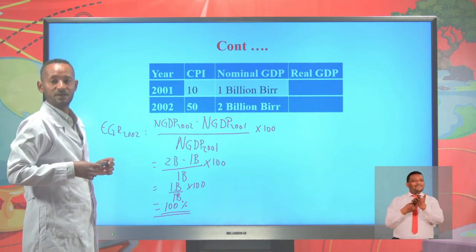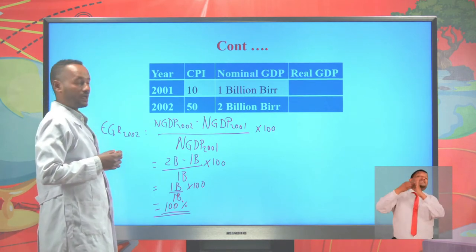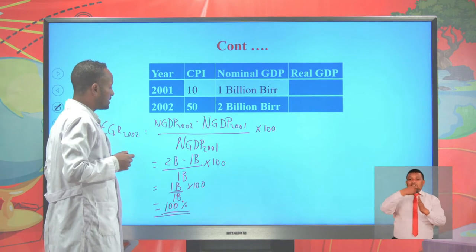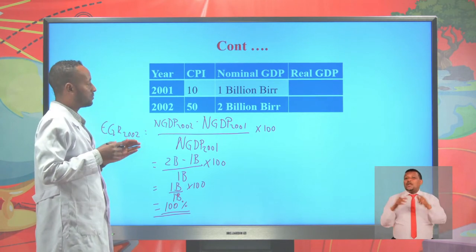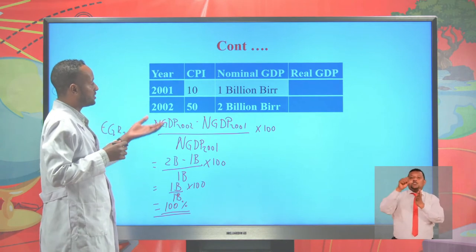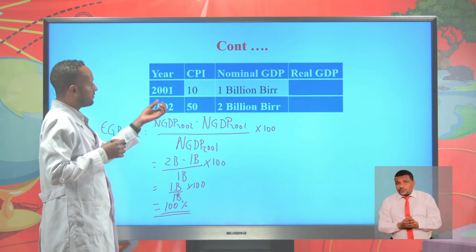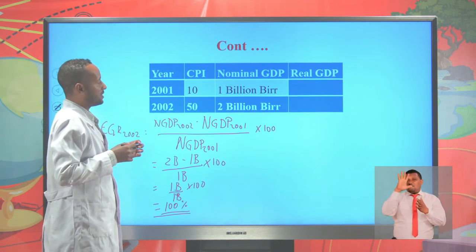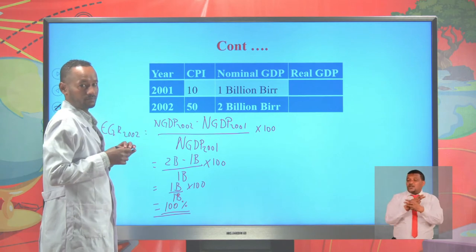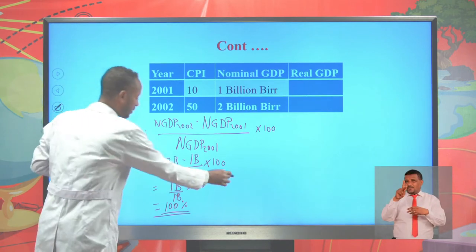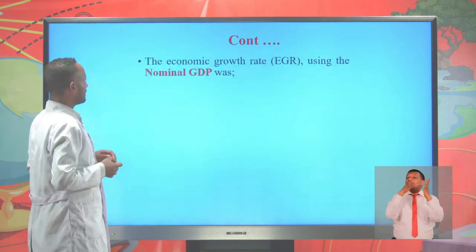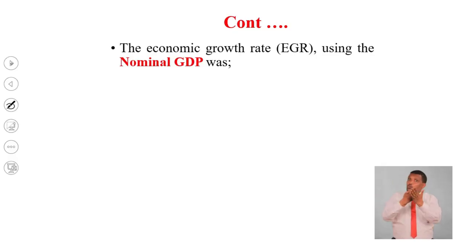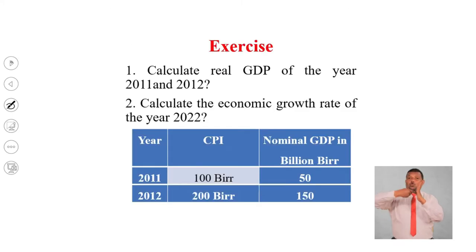However, this 100% increase in GDP is not associated with increasing productivity. It is associated with the rise in price of goods and services, because the CPI is five times higher and the nominal GDP is only twice as large. So this is the wrong way of calculating economic growth in an economy. The right way is the real approach.